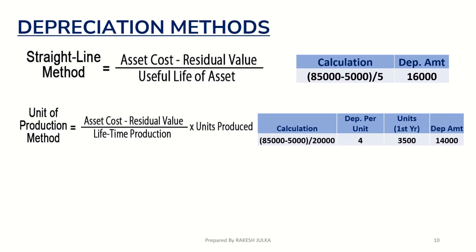The second method is the unit of production method. Asset cost minus residual value divided by lifetime production, multiplied by units produced in that year: ($85,000 minus $5,000) divided by 20,000 units equals a depreciation per unit of $4. In the first year, 3,500 units were produced, so the depreciation amount will be $14,000 for the first year.